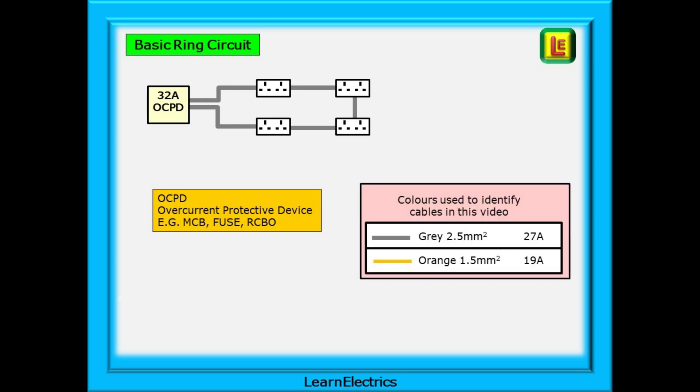To begin with, we'll assume just a basic ring circuit in a basic domestic dwelling under normal conditions. In order to help with understanding the drawings, we'll colour the different sized cables as follows: 2.5 twin and earth will be coloured grey on the drawings and orange will be used to show 1.5 twin and earth cable. Notice also the maximum current carrying capacity of each sized cable under normal conditions.